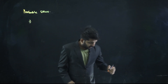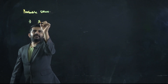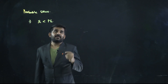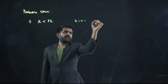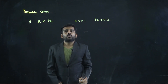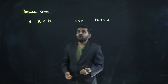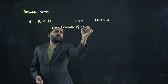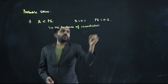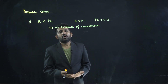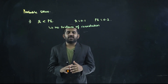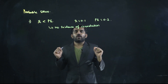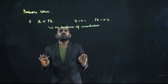Point number 1: If r is less than probable error — normally this is unlikely, but suppose r is 0.1 and probable error is 0.2 — then there is no evidence of correlation. Even if r comes out as 0.1, which seems like there is less correlation, if the probable error is higher than r, then there is no correlation between the two variables in the population.